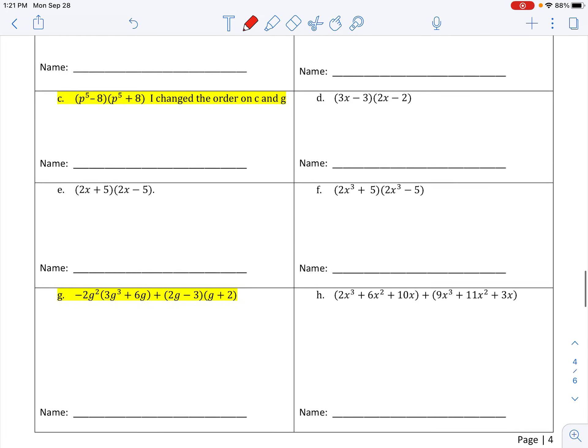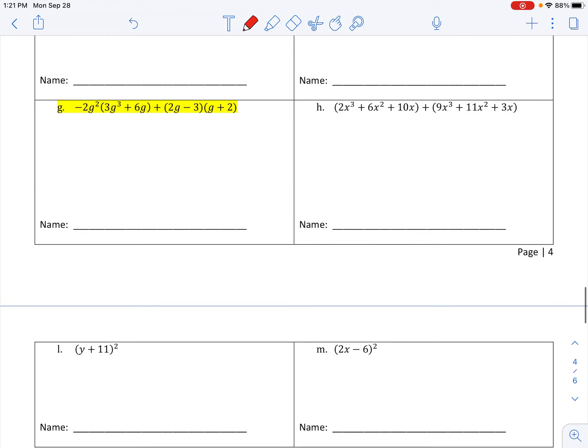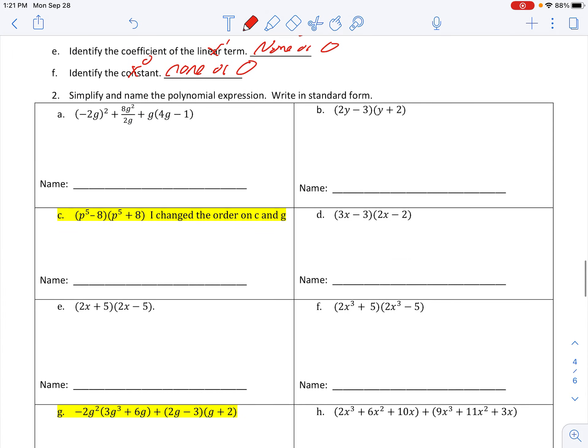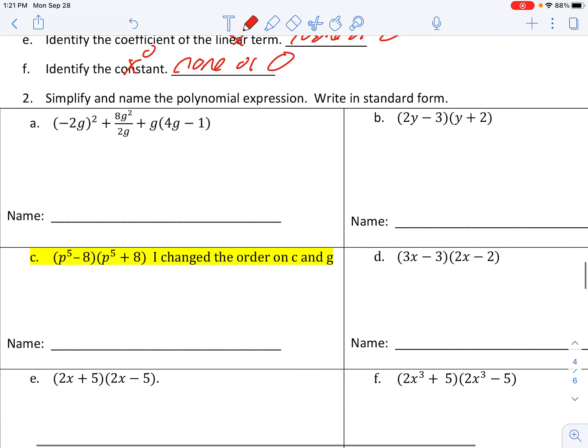All right. Simplify in names. Let's take what we've been doing before and do a bunch of kind of work with that, and we'll get into some new things with that. So on letter A, simplify first. So do your order of operations. Negative two g in parentheses to the second goes back to your geometry. Square each one. Gives me a positive four g squared.